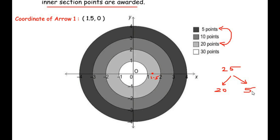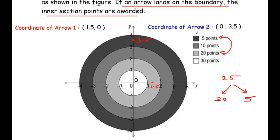For the second arrow, since it gives 5 points we concentrate on the outermost section. I am going to choose a point on the y axis, exactly in between 3 and 4, so I will take it as 3.5. Since it is on the y axis the coordinates are (0, 3.5) — the x coordinate is 0 because the arrow is on the y axis. So the coordinate of arrow 2 is (0, 3.5).